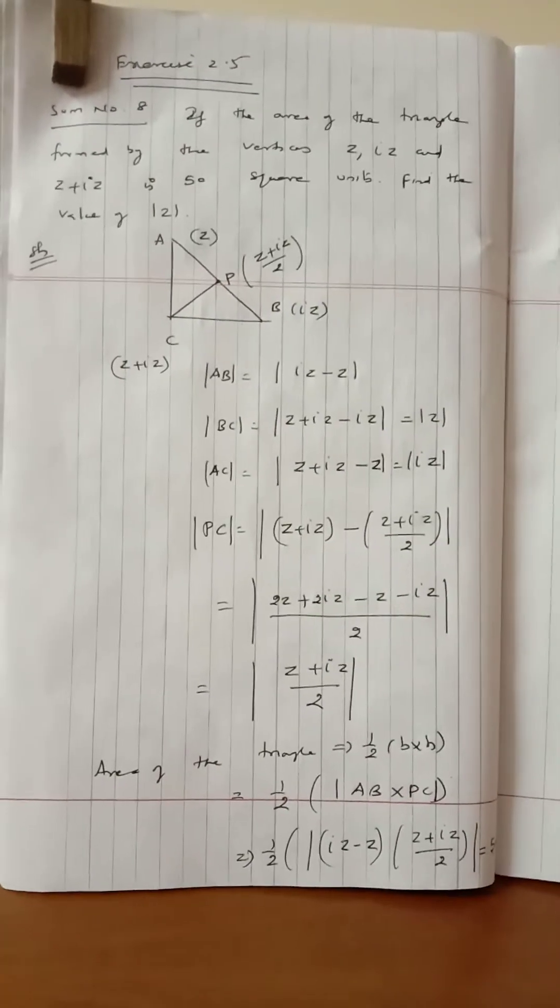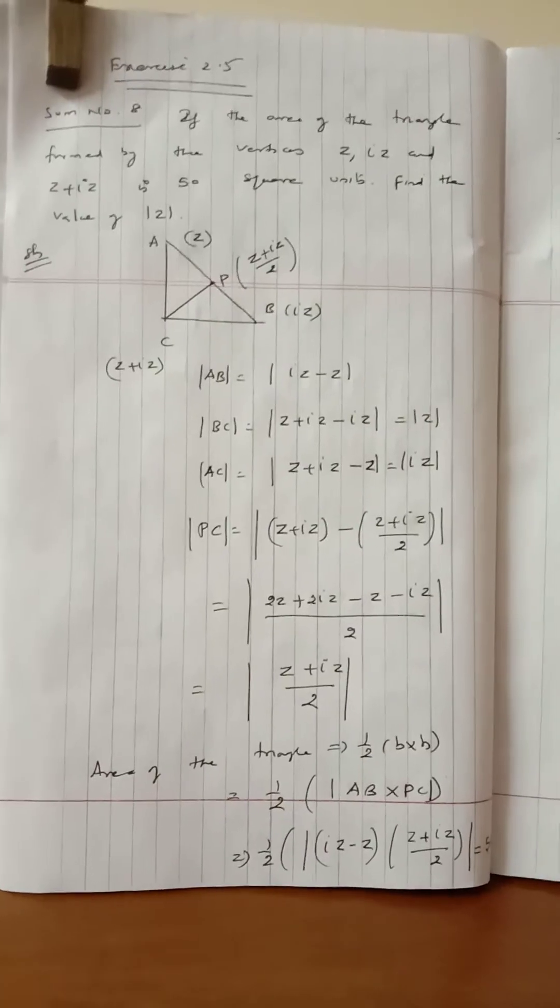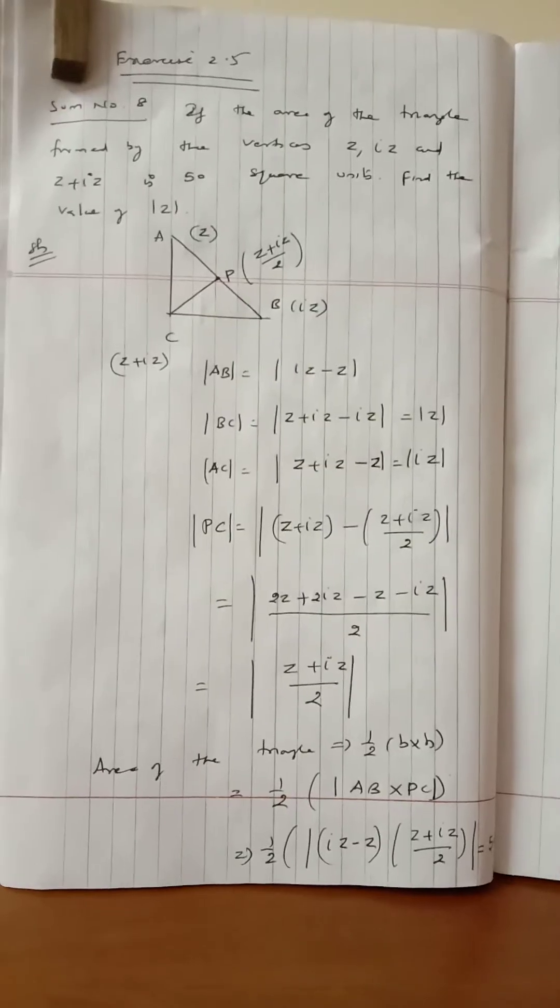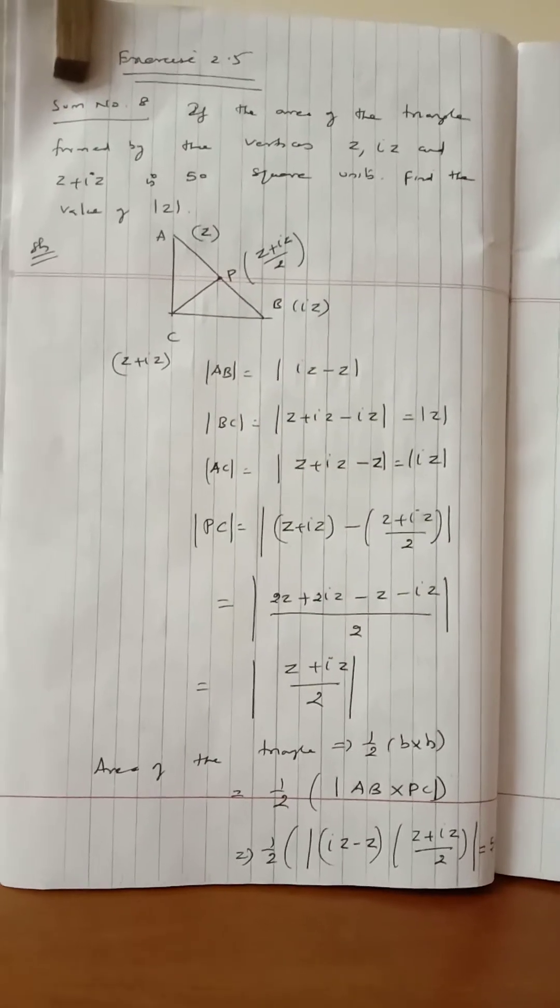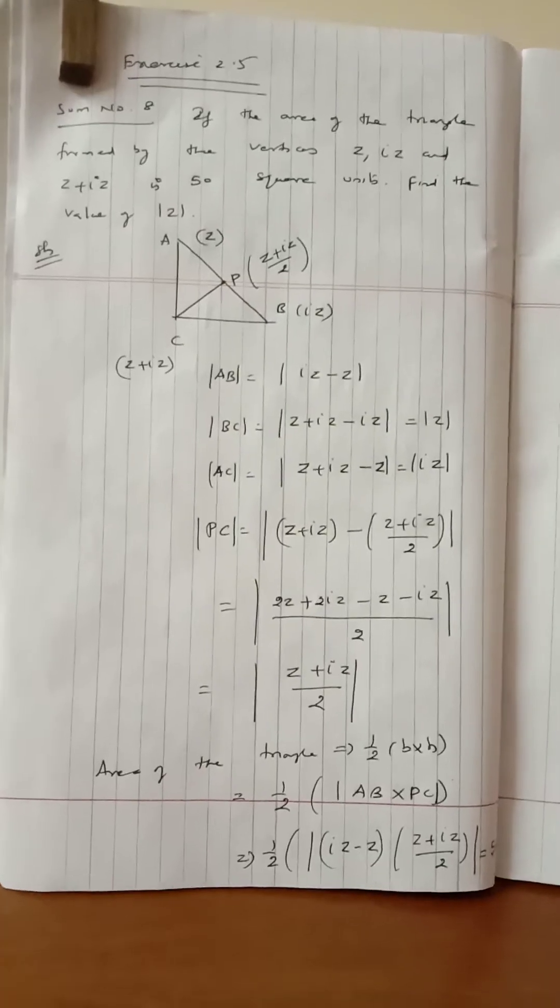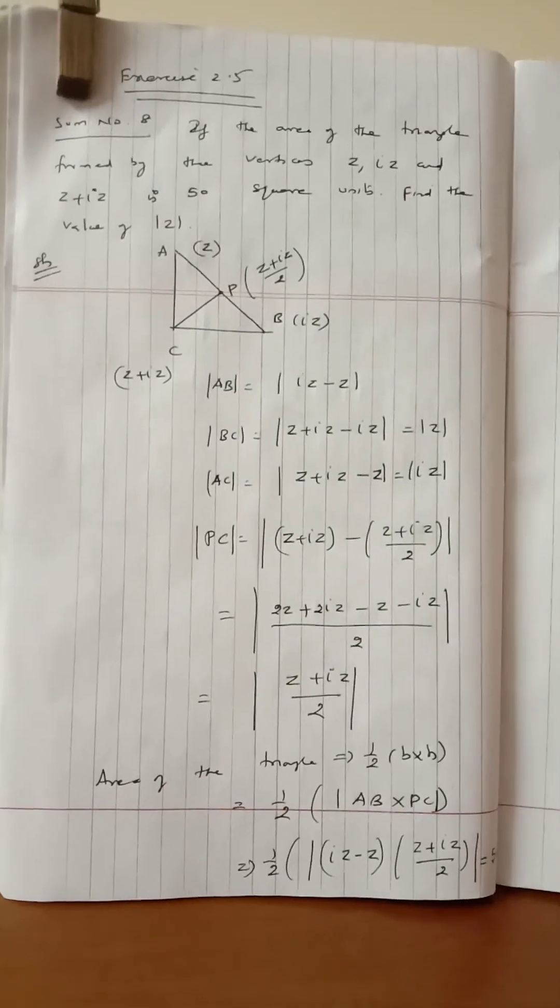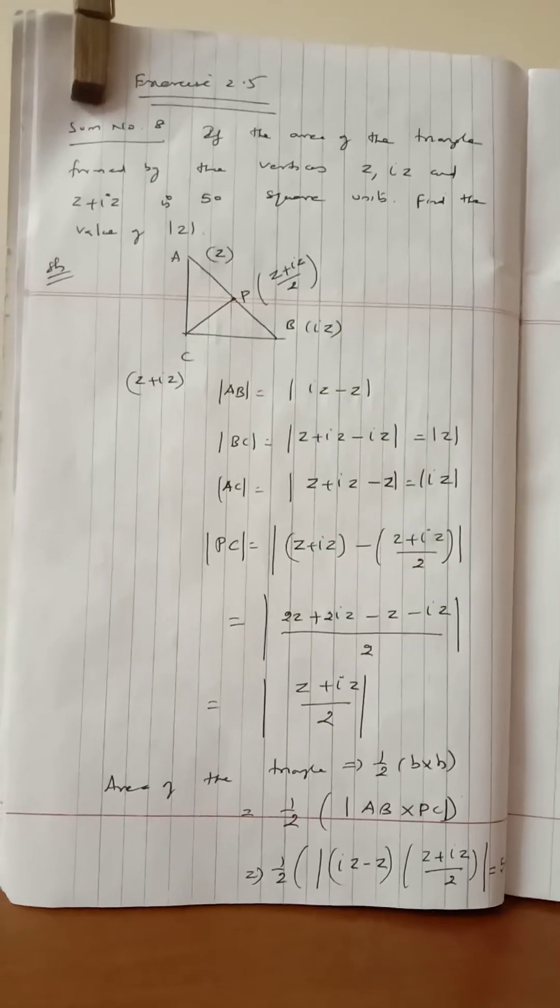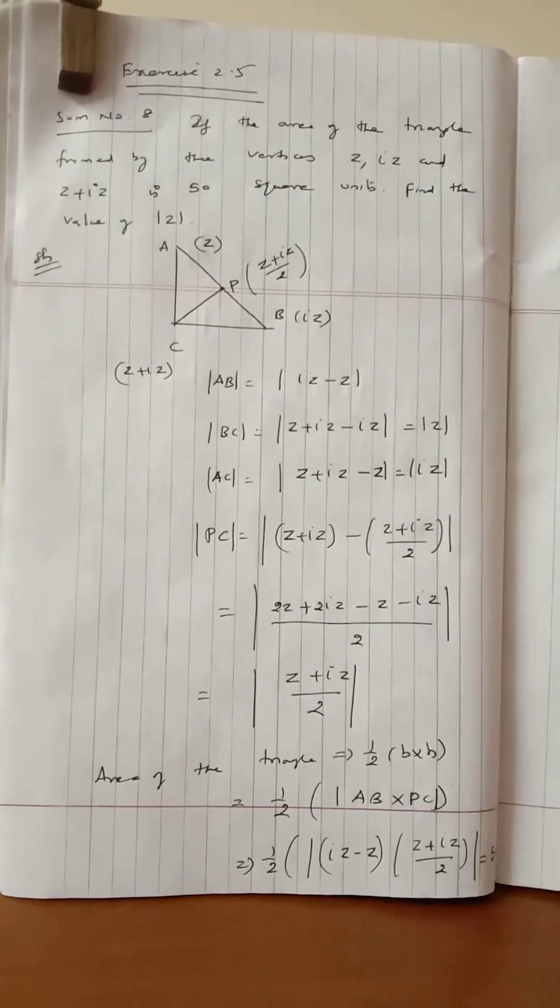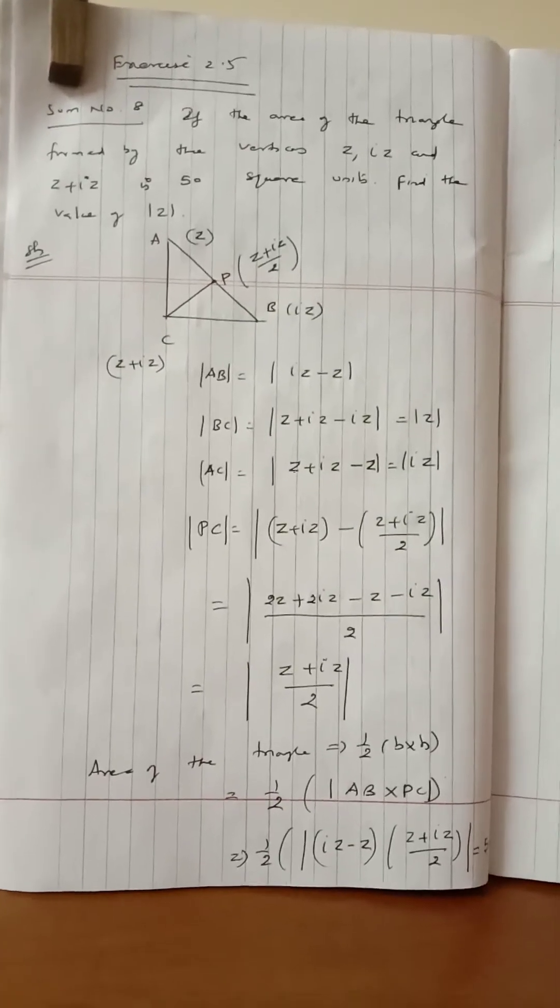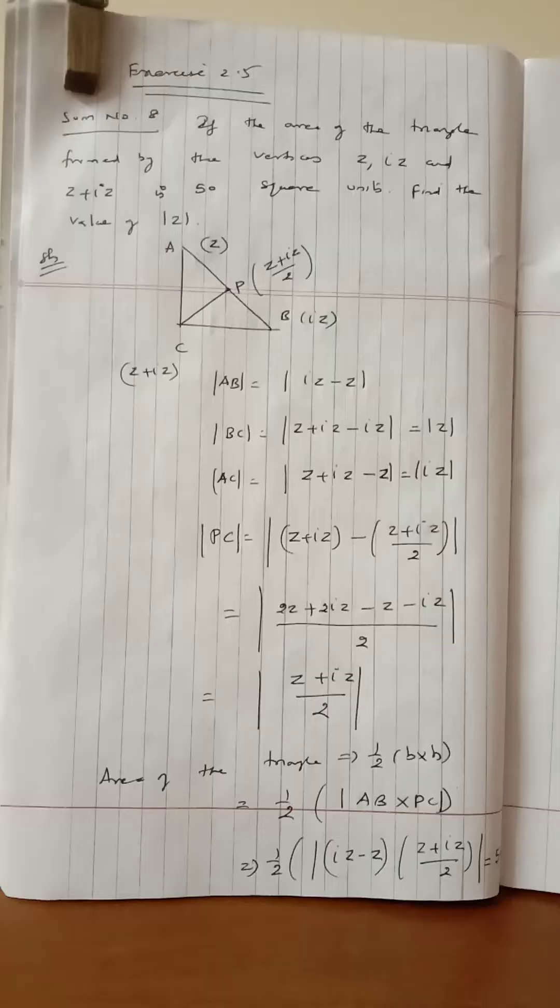BC distance is modulus of z plus iz minus iz, which cancels to modulus of z. AC distance is modulus of z plus iz minus z, which cancels to modulus of iz.